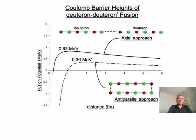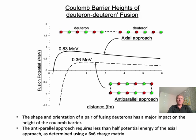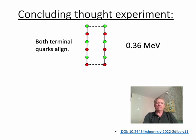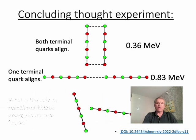The result is quite a difference when we consider the impact of alternating quarks on the fusion reaction. The shape and orientation of a pair of fusing deuterons has a direct impact on the height of the Coulomb barrier. The anti-parallel approach requires less than half the potential of the axial approach. Here I'd like to leave you with a thought experiment. We know that the anti-parallel approach connects two terminal quarks and requires a potential of 0.36 mega-electron volts. The axial approach is 0.83 mega-electron volts connecting only one terminal quark. With that in mind, what is the role of rotational kinetic energy?